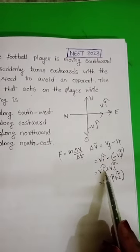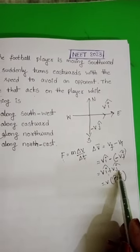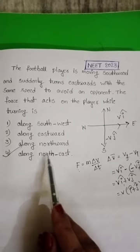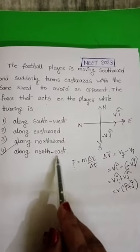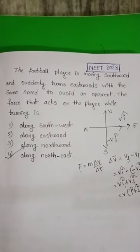So we get V_i cap plus V_j cap. The force acting on the player is along the north-east direction. Therefore, the fourth option is correct.